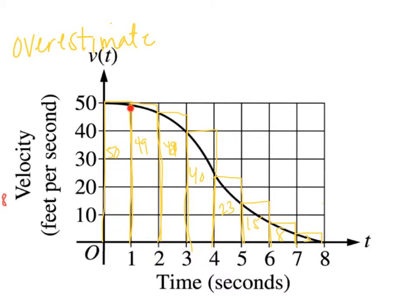This next height is going to stop right here at about — I just called it 49 — so that's 1 times 49. This one is going to hit by the left right here, I called that 48. This one over here is at 40. This one I guesstimated 23. Here I guesstimated 15 because my widths are 1, so it's height times 1. Here I guesstimated 8 and here I guesstimated 3. So clearly that's an overestimate.